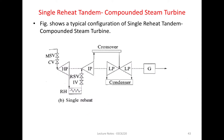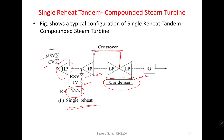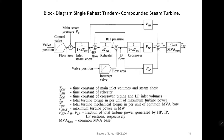Now, considering the single reheat tandem compounded steam turbine: in this system there is a main stop valve MSP, a controlling valve CV, then the high pressure turbine, followed by reheating, then an intercept valve IV and a resetting valve RSV, then the intermediate pressure turbine. After the crossover, steam goes to the low pressure turbine. All these turbines are connected to the generator, and the remaining steam from the low pressure turbine is condensed.